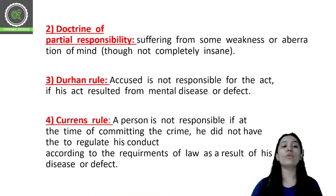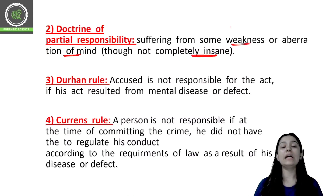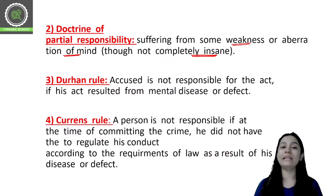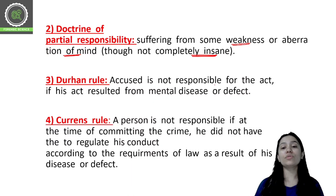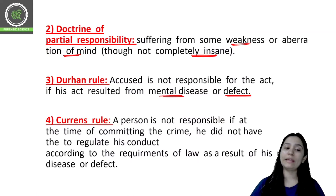The doctrine of partial responsibility applies when a person is suffering from some weakness or aberration of the mind — that person is not completely insane. Then we have the Durham rule: the accused is not responsible for the act if their act resulted from a mental disease or defect.